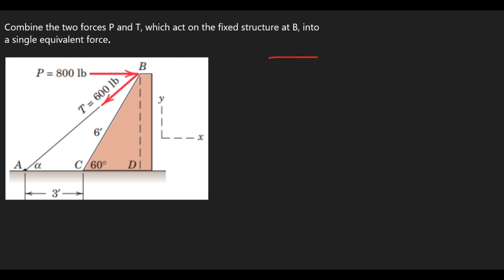So I am going to draw a free body diagram for this system. So I have force P which is 800 pounds and then force T which is 600 pounds, and this is point B. When you look at angle alpha here, it will have the same angle alpha here because they are alternating angles. So in that case, you are going to have this angle to be alpha, which is the angle that force T makes with the X axis.